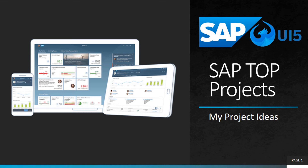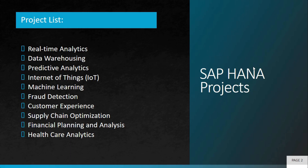Welcome to my project ideas. This is an ongoing series on SAP top projects, and in this video we'll learn about SAP HANA top projects. HANA is a product of SAP which stands for High Performance Analytic Appliance. SAP HANA is basically a multi-model database that stores data in its memory instead of keeping it on a disk. Memory is like RAM — random access memory — and RAM is faster than hard disk.